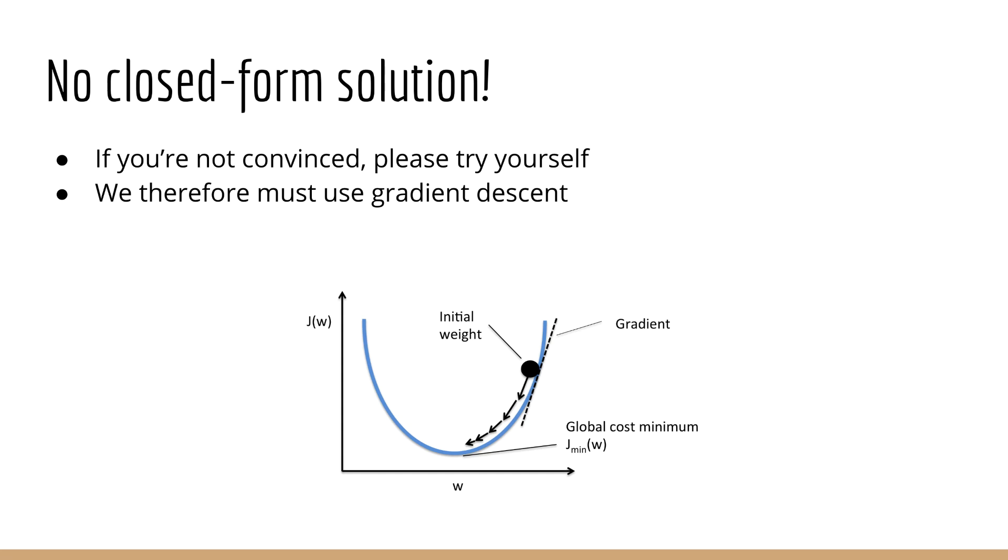So what do we do? Well, we know that this problem doesn't have a closed-form solution for W. If you're not convinced of this, you should try to solve for W and see how far you get. Our strategy then is going to be use gradient descent or gradient ascent. In order to do this, we have to find the gradient of j with respect to W. Then, once we have that, we can use our iterative gradient descent algorithm to move W in the direction of the gradient until it converges to the solution.